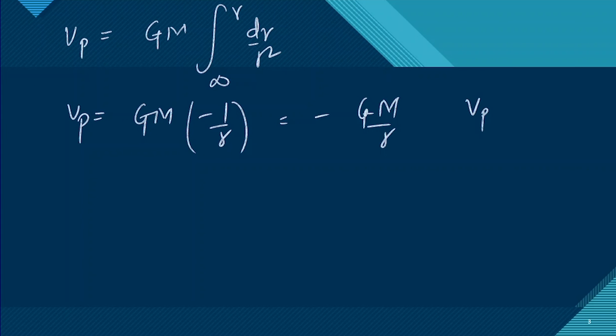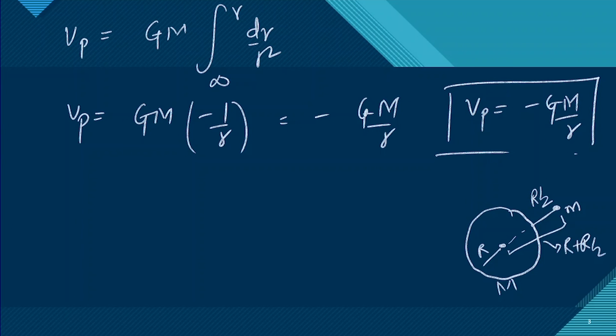In the second part, we have to find out the work. In the second question, we are given this Earth of mass M, and we are given this small body of mass m. We have to project it at a distance of R/2. So the distance of this mass from the center will become R plus R/2, that is 3R/2.